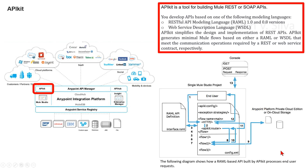Here is how APIkit works with RAML. The following diagram shows how a RAML-based API built by APIkit processes end user requests. In step one, the end user sends an HTTP request to the API. In step two, the HTTP or Jetty endpoint in the main flow receives the request and passes the message to the APIkit router. In step three, the router checks with the interface to confirm that the resource-action pair exists in the interface.